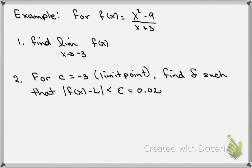In this example, we're given a function f(x) = (x²-9)/(x+3). The first part of the question asks us to find the limit as x goes to -3 of f(x).